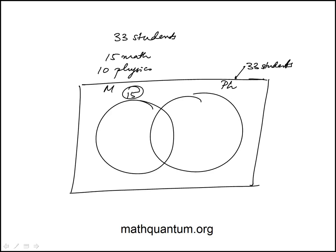This is 15, that's 10. And they tell us that 5 are enrolled in both a mathematics course and a physics, which means math alone would be 10 because this circle is 15. Same thing, physics alone is 5.